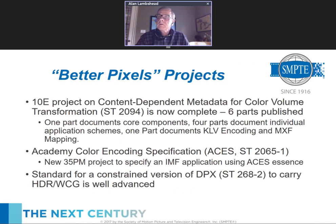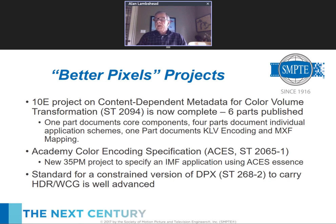Moving on to 'better pixels,' encompassing high dynamic range, wide color gamut, and different color spaces. There are projects going on mostly in our 10E essence committee and in our 32F committee. The content-dependent metadata for color volume transformation project, also known as ST 2094, is a six-part suite of standards. There are two core component parts and four application schemes for how that metadata is used, plus a KLV encoding and an MXF wrapping. That project is now done and the group will be disbanded shortly.